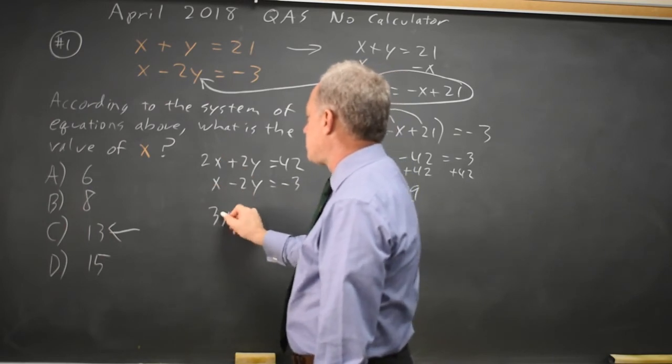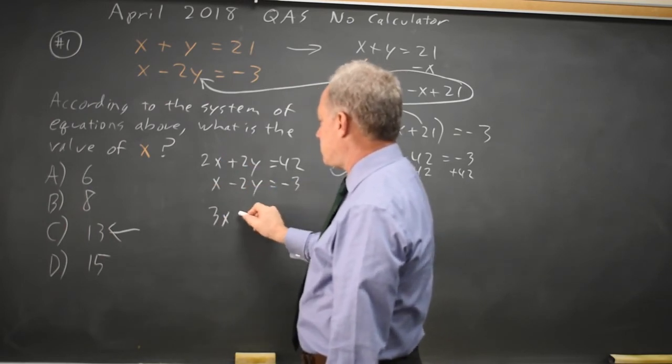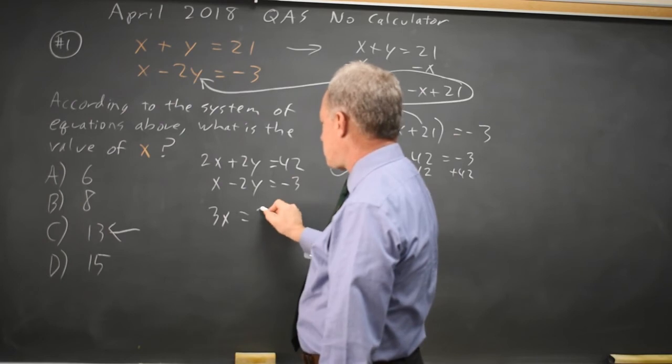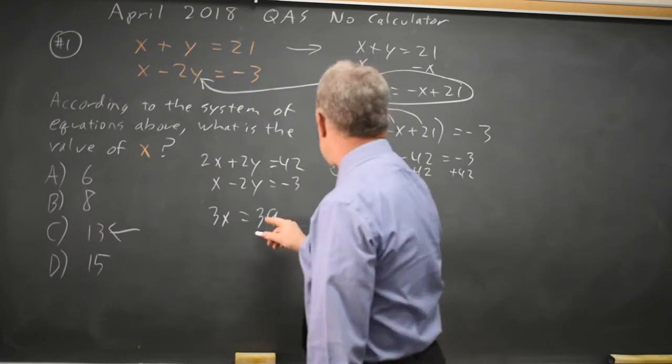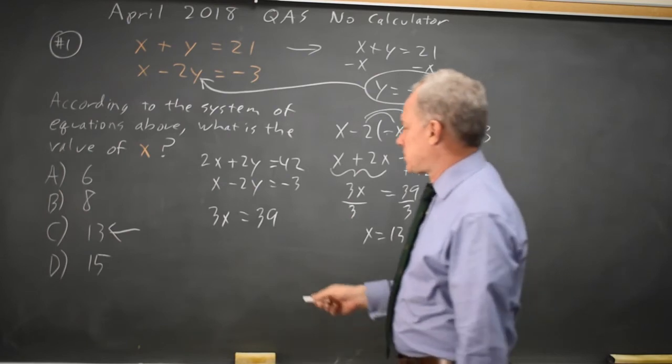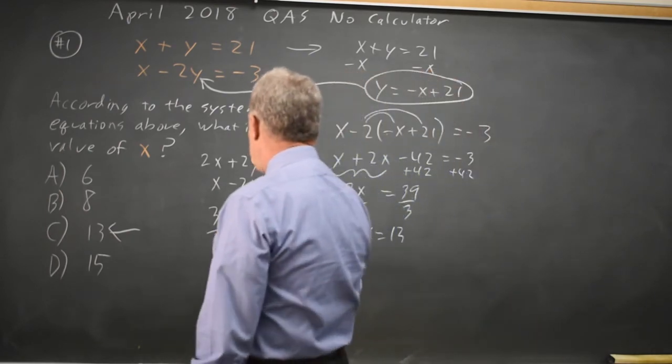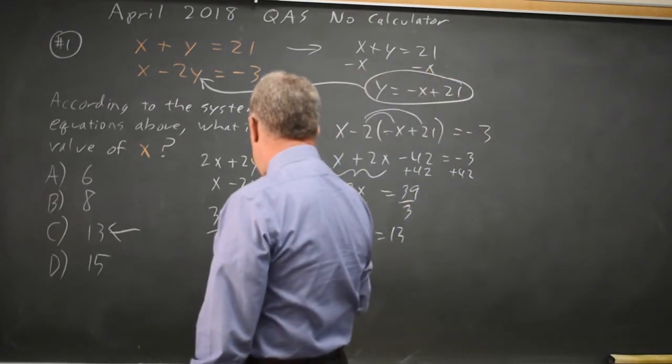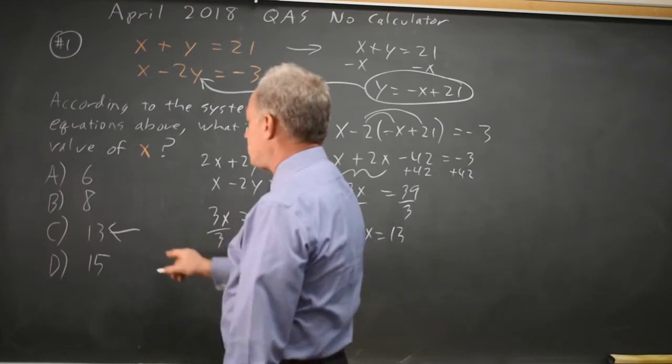2x plus x is 3x. 2y minus 2y is 0y. 42 minus 3 is 39. And this is exactly the same arithmetic for the same reasons. Divide both sides by 3. And again, I get x equals 39 over 3 is 13. Choice C.